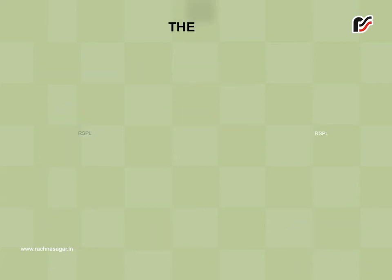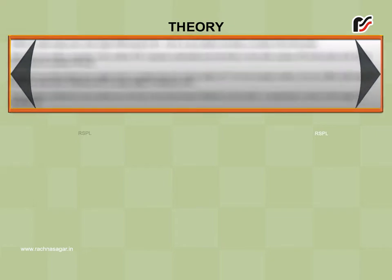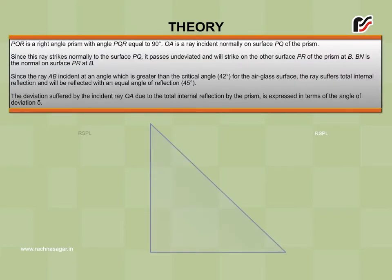Theory: PQR is a right-angle prism with angle PQR equal to 90 degree. OA is a ray incident normally on surface PQ of the prism. Since this ray strikes normally to the surface PQ, it passes undeviated and will strike on the other surface PR of the prism at B. BN is the normal on surface PR at B. Since the ray AB incident at an angle which is greater than the critical angle 42 degree for the air-glass surface...